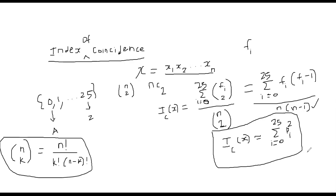Therefore, f_i by n is an approximation of p_i. f_i minus 1 by n minus 1 is nearly same as f_i by n. Therefore, we could say we are going to approximate IC(x) by i equal to 0 to 25 p_i square summation.